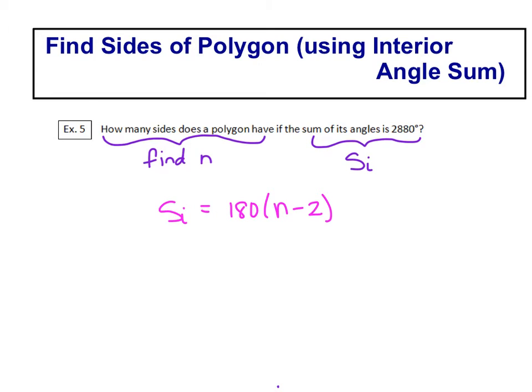So this time, what we have, or what we know, is the sum, and we don't know n. So we're going to plug in that 2,880 in for the S, for the sum.